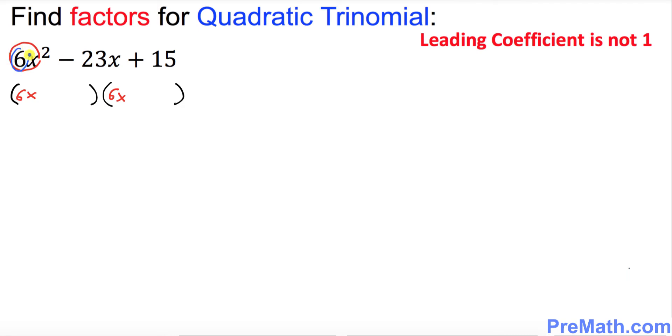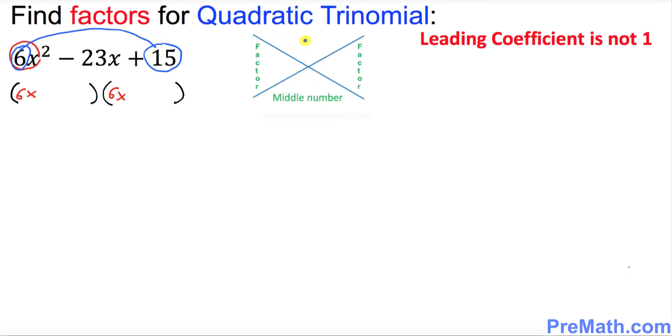Now I want you to just focus on these two end numbers: 6 and positive 15. I want you to multiply these two end numbers. 6 times 15 is 90, so put that 90 on the top over here in this diagram.